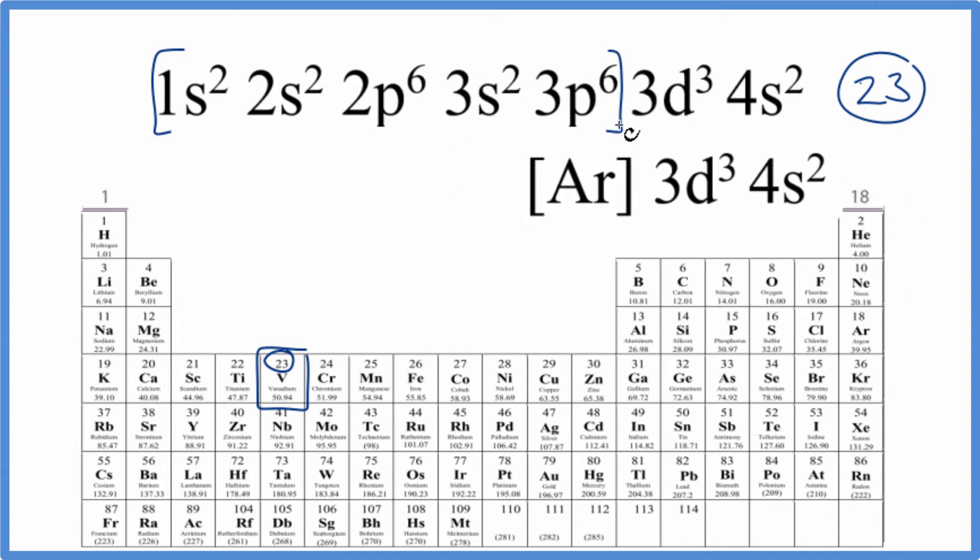Do note that with both of these, sometimes the 4S2 is written before the 3D3, just something to be aware of. So that's the first way we could figure out the electron configuration that ends in this 3D3, 4S2.